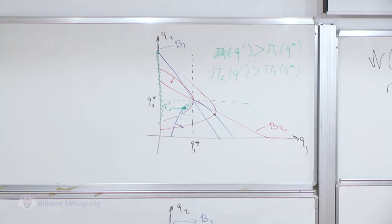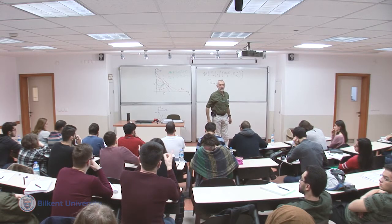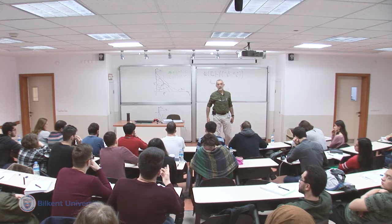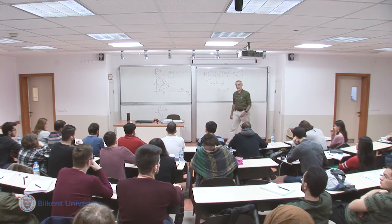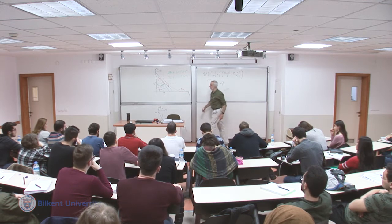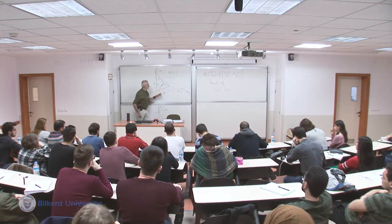The condition for Pareto efficiency is where the isoprofit curves of each agent are tangent to each other — that's where we have Pareto efficient points.